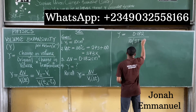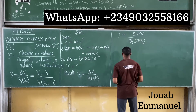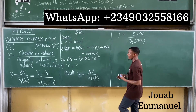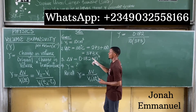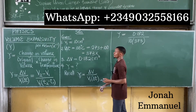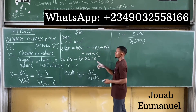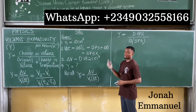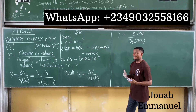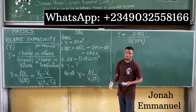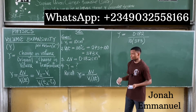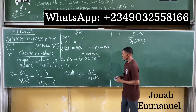ΔT is 373 K. You might wonder why I didn't convert the volume from cm³ to m³ — the reason is that both ΔV and V1 are in cm³, so they cancel out, making the conversion unnecessary.